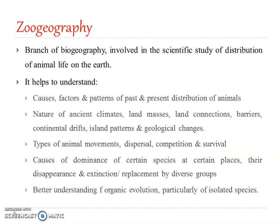What is Zoogeography? Zoogeography is a branch of biogeography which deals with the scientific study of distribution of animal life on the earth and the factors controlling it. Zoogeography derives its knowledge from several other branches of science such as geology, ecology, paleontology, evolution, and systematics.